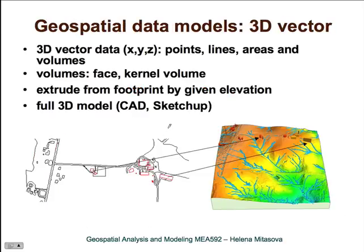We can have not only two-dimensional vector data, but also three-dimensional vector data, where the representation of volumes involves face and kernel volume. The simplest way to create this three-dimensional vector data is to extrude them from footprints by the given elevation of the building. Here we have the footprints of the buildings, for example from a planimetric map. Then we can extract the elevation of the building, for example from LiDAR data, and create a three-dimensional representation of the building.